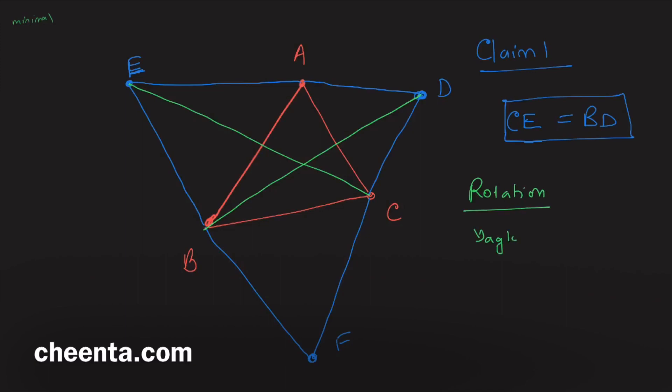There is a very beautiful book by Yaglom called Geometric Transformations — you can find it online. There are four volumes and you can learn a lot about transformation geometry from this book. Coming back to the problem: we want to show that BD and CE are equal.